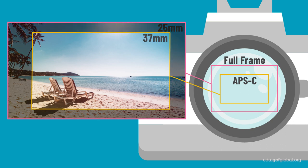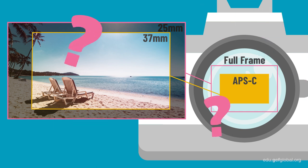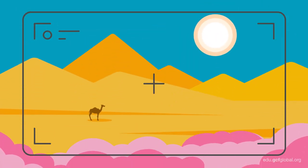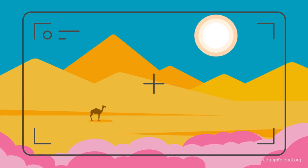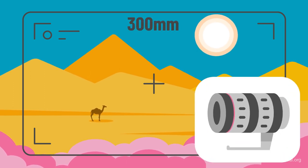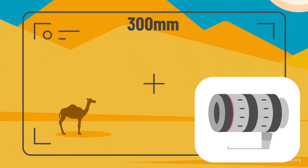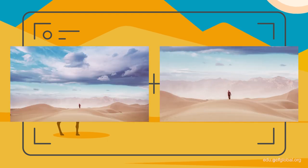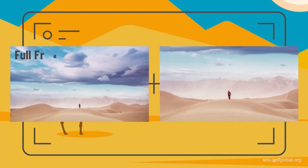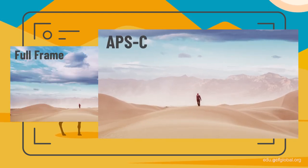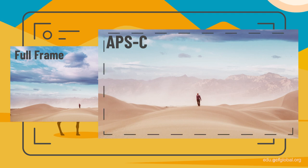Does this mean that a smaller sensor won't work for you? No. The answer really depends on how you need your pictures to be. If you need to take a long-distance photo and only have a 300mm lens, you can use that same lens on a small sensor camera, giving you a longer focal length. For example, these two photos were taken with the exact same lens but with different cameras. On the right, you can see how the crop factor modified the actual framing of the picture.